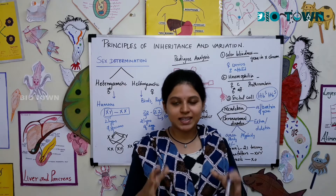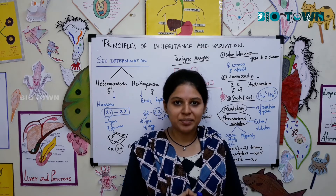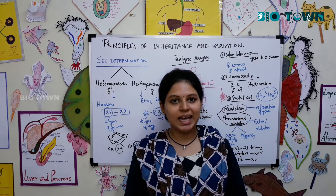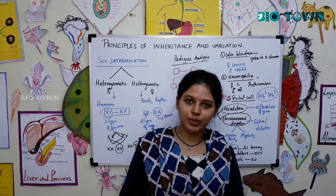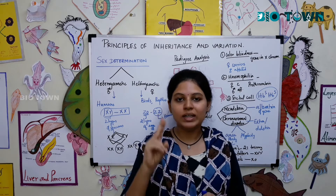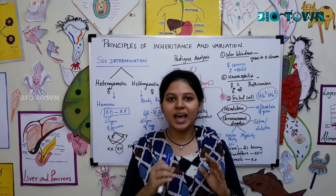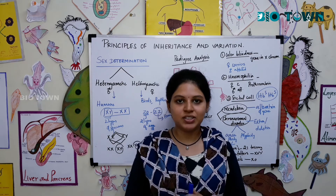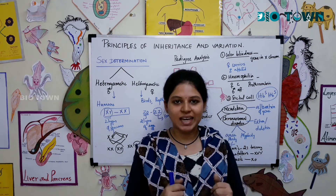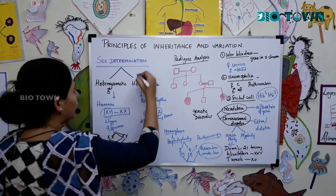We are going to complete the chapter on Principles of Inheritance and Variation. There are only two concepts remaining, and once we finish these, we are done with this chapter.